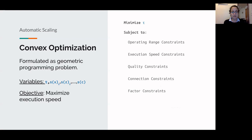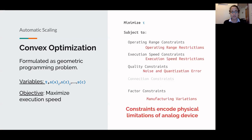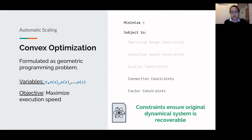The convex optimization problem, formulated as a geometric program, is the core of the UCSP. It contains many different kinds of constraints: operating range constraints and execution speed constraints encoding the physical limitations of the analog device, quality constraints and factor constraints encoding manufacturing variations, and connection and factor constraints ensuring we can recover the original dynamical system at every point in the circuit.